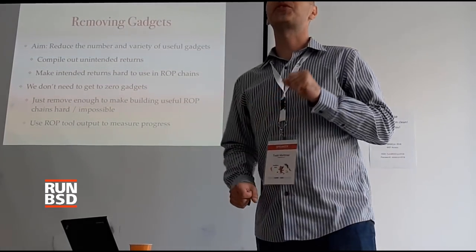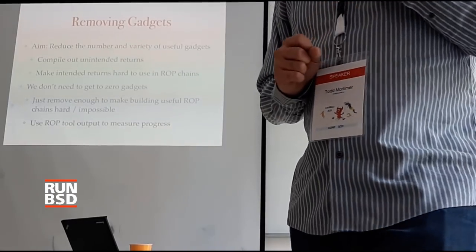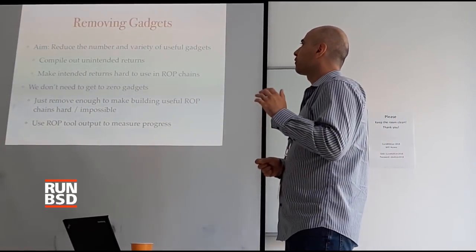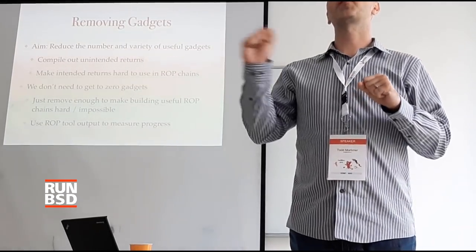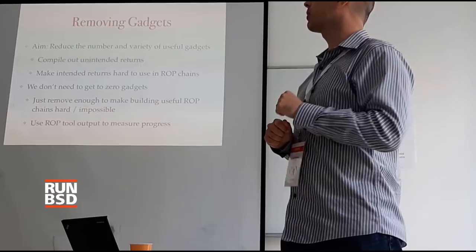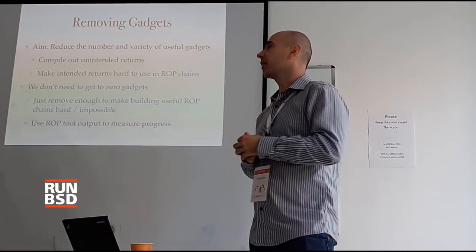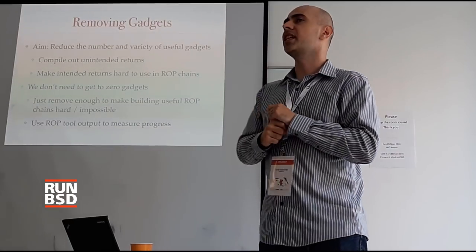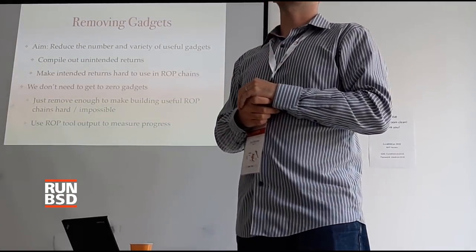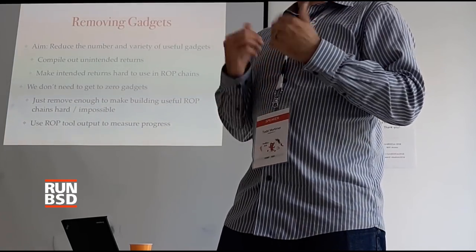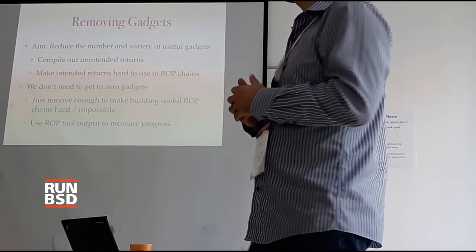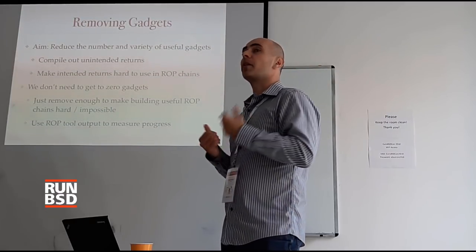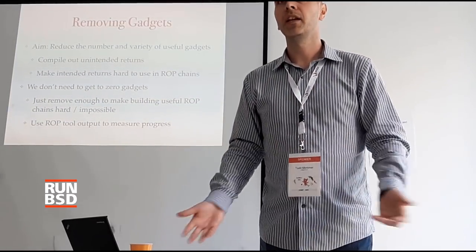So what are we going to do? We're going to try to reduce the number of gadgets or remove gadgets and make this hard. Since everyone is using tools, if we remove gadgets, the tools can't find the gadgets they need and can't figure out how to exploit your program anymore. For unintended returns — polymorphic gadgets terminating on a return that's not really a return — we're going to try to compile those out; the compiler can choose to emit something else. For intended returns, we can't not return, so we're going to try to make those returns hard to use. Importantly, we don't need to get to zero gadgets — we just need to reduce diversity enough that tools can't string the remaining gadgets together.